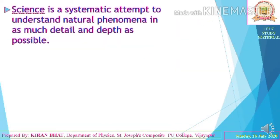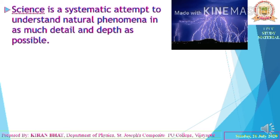The definition of science: science is a systematic attempt to understand natural phenomena in as much detail and depth as possible. For example, why does an apple fall down from a tree and not go up? Or why does lightning happen, and why do charges travel from a cloud to the ground? These are natural phenomena we study under science.